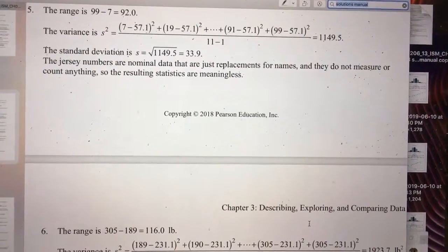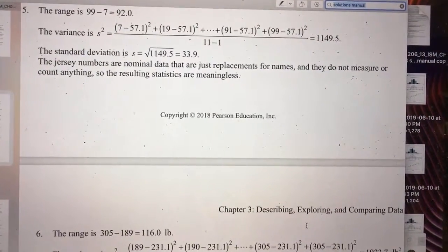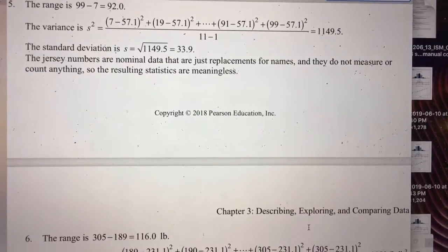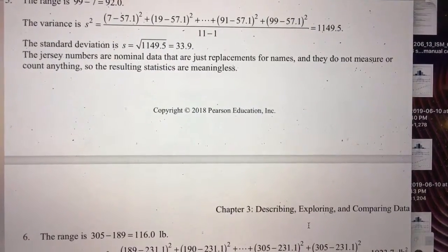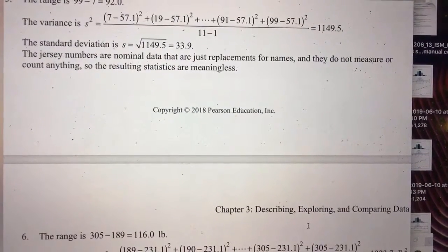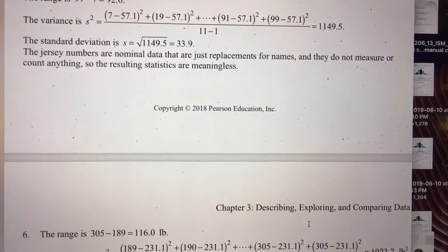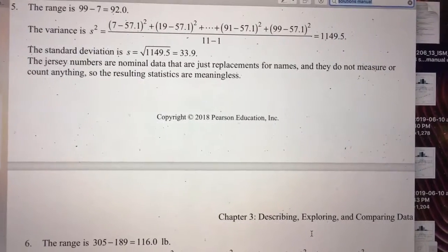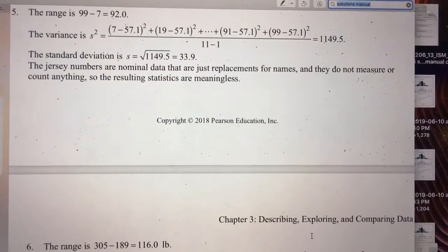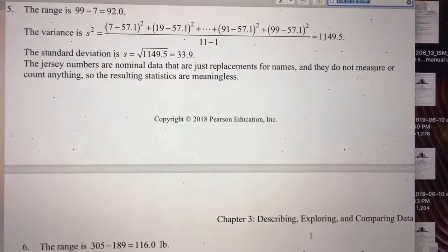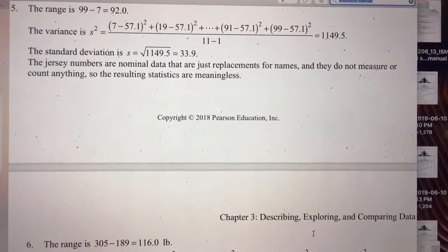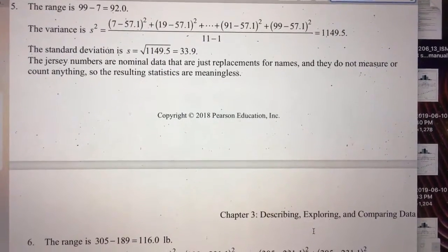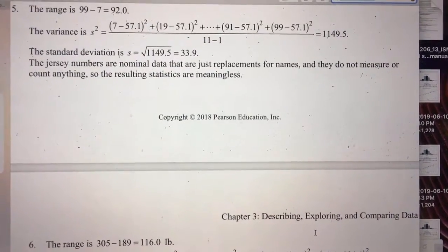However, the jersey numbers are nominal data — they are just replacements for names and do not measure or count anything, so the resulting statistics are meaningless. So you went through all of that to give those numbers, and they were meaningless.